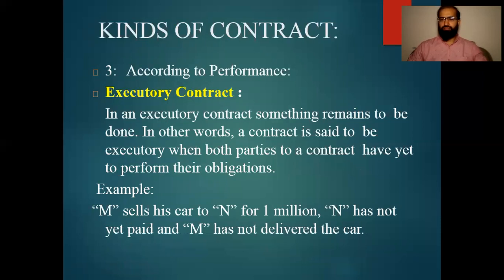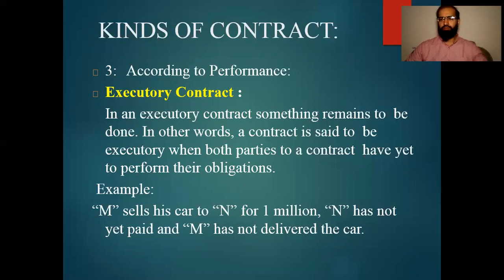In an Executory Contract, something is meant to be done. In other words, a contract is set to be executory when both parties to the contract have yet to perform their obligations. For example, Mr. A says: this is my bike and I want to sell it for 30,000. Mr. B says: okay, I will buy that bike at the price of 30,000. But both parties still have to play their roles.